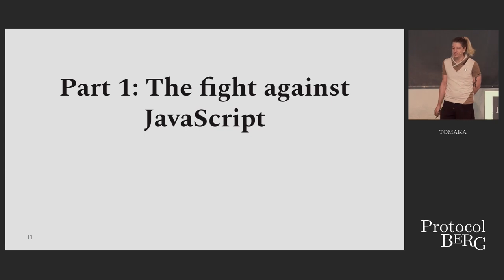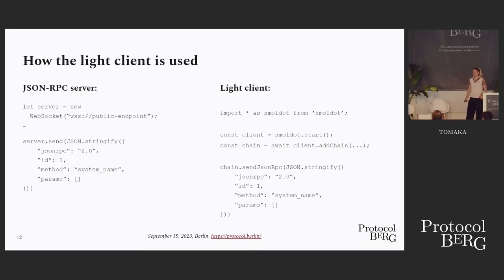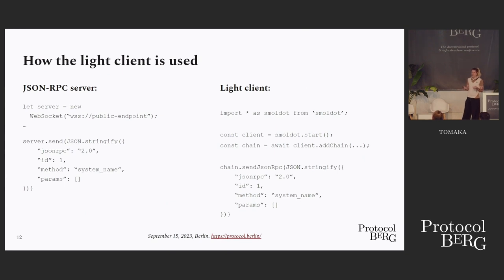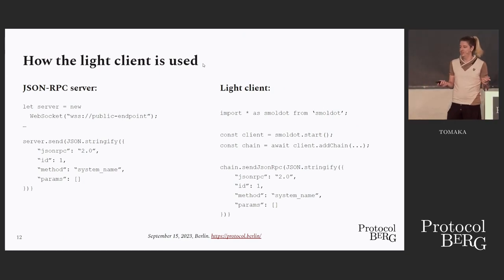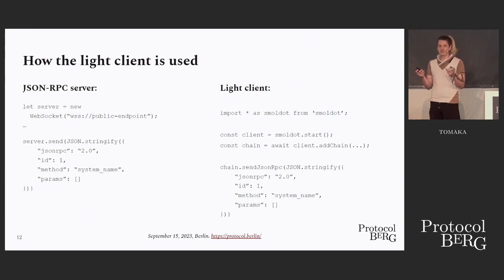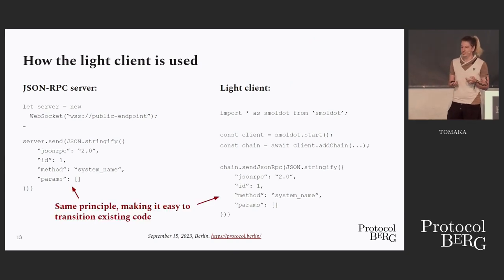The way we created this light client is by copying the same API as JSON-RPC servers. We wanted to make it easy to transition. On the left you can see a normal request to a JSON-RPC server — connect through WebSocket. On the right, with a light client, it's basically the same: you send a JSON-RPC request. That was very important because we didn't want everyone to have to rewrite everything from scratch.